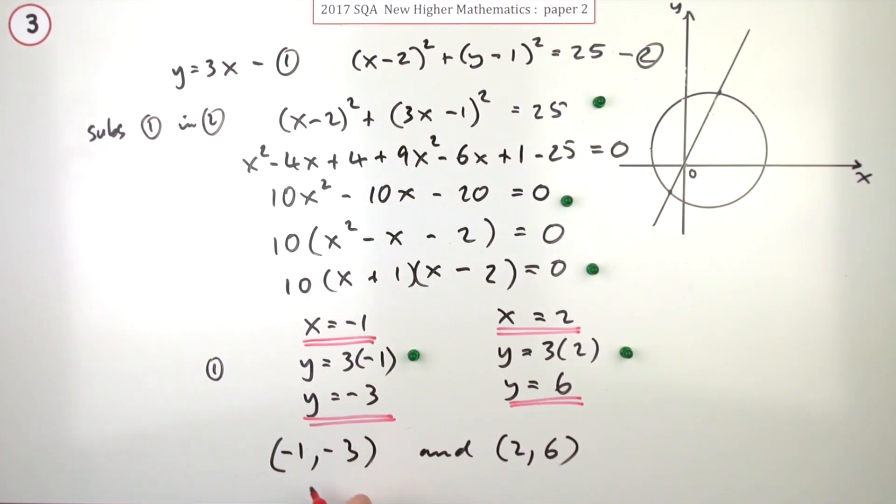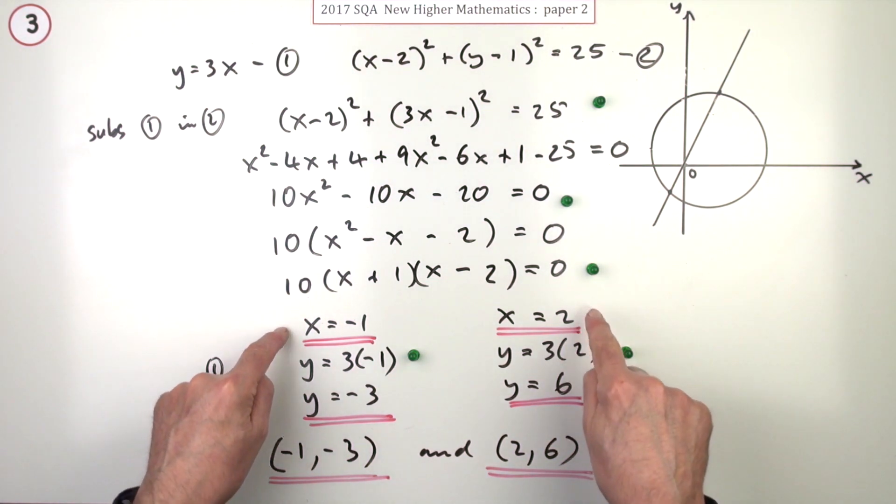So there's the point (-1, -3) and it intersects also at (2, 6). But here you get the marks just by stating the individual coordinates where it intersects.